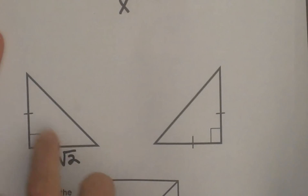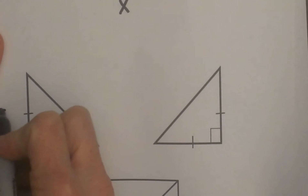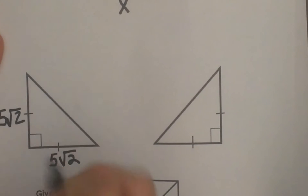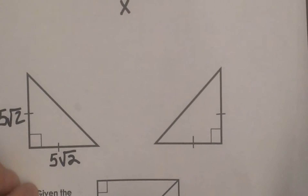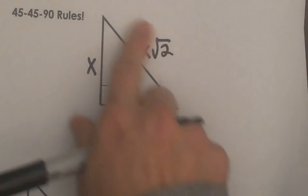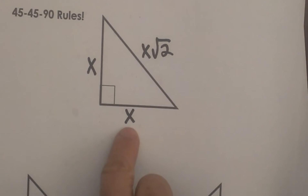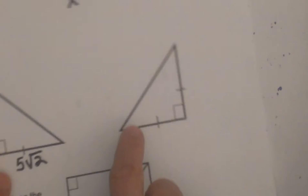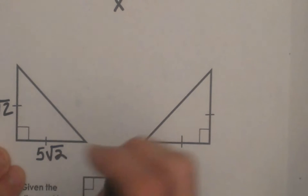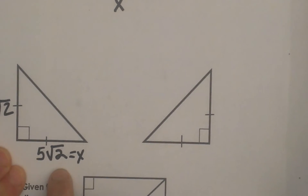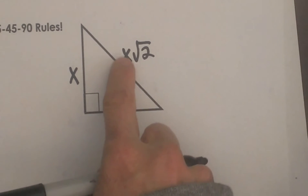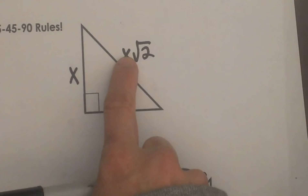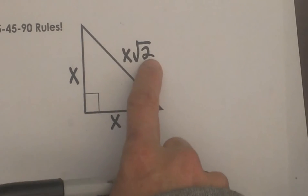We automatically know that this other leg must also be 5 square root 2 because we have an isosceles triangle. Now we need to figure out what the length of the hypotenuse is. Looking at our original triangle, x is equal to the leg, so x equals 5 square root 2. Now I need to plug that x into the formula — I am going to replace x with 5 square root 2 and multiply it by the square root of 2.